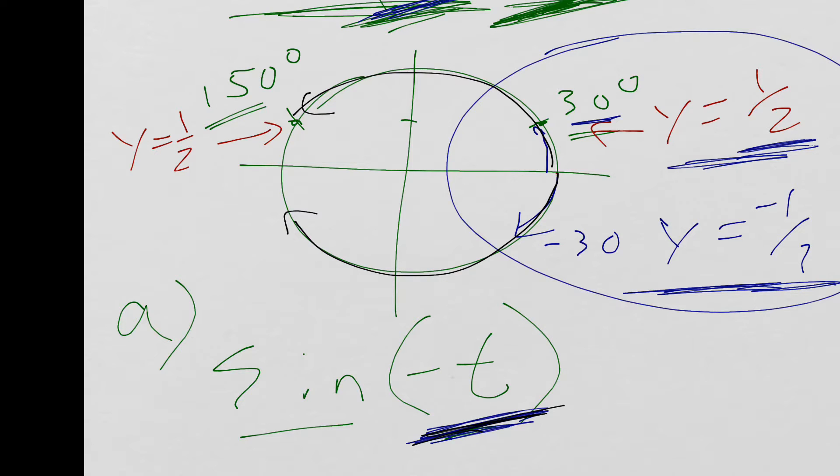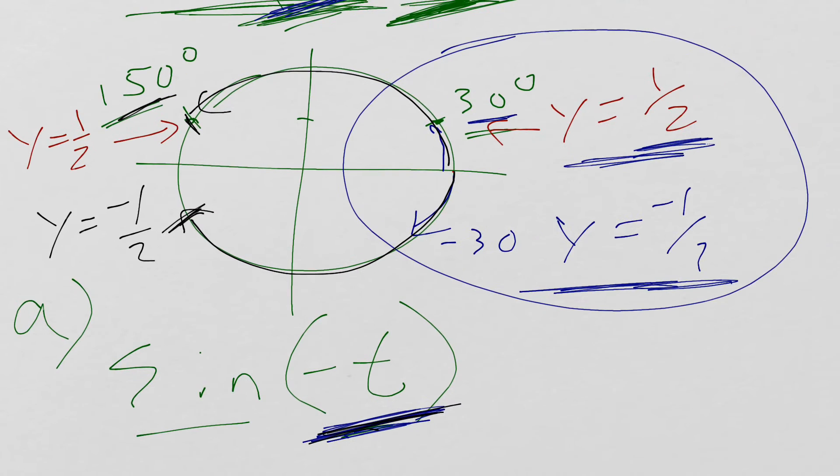And you're going to notice that these two are going to mirror each other. So if I go positive 150, I'm here. If I go negative 150, I'm here. And my Y value would now change to negative 1 half also, just like it did over here.